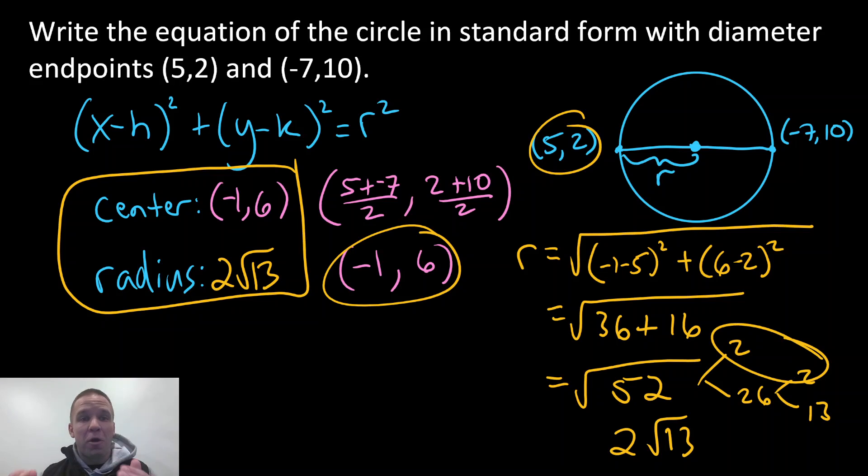Now we want the equation in standard form. Let's not forget to answer the question here. So let's see what we got. So I'm gonna have the quantity x, and then it's minus -1, so plus 1 squared, plus, and then y minus 6 quantity squared,